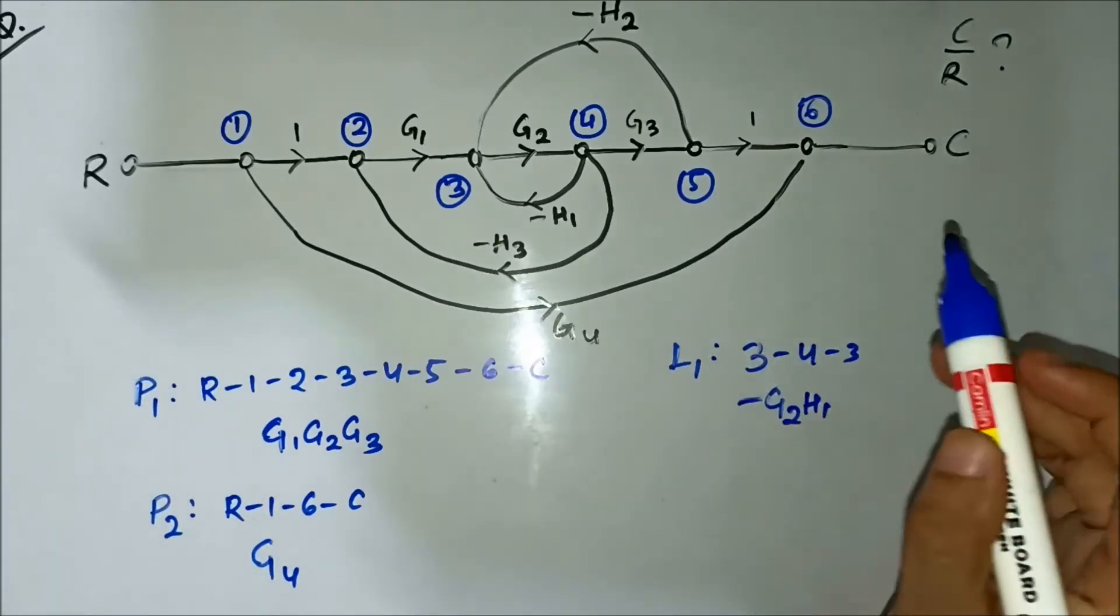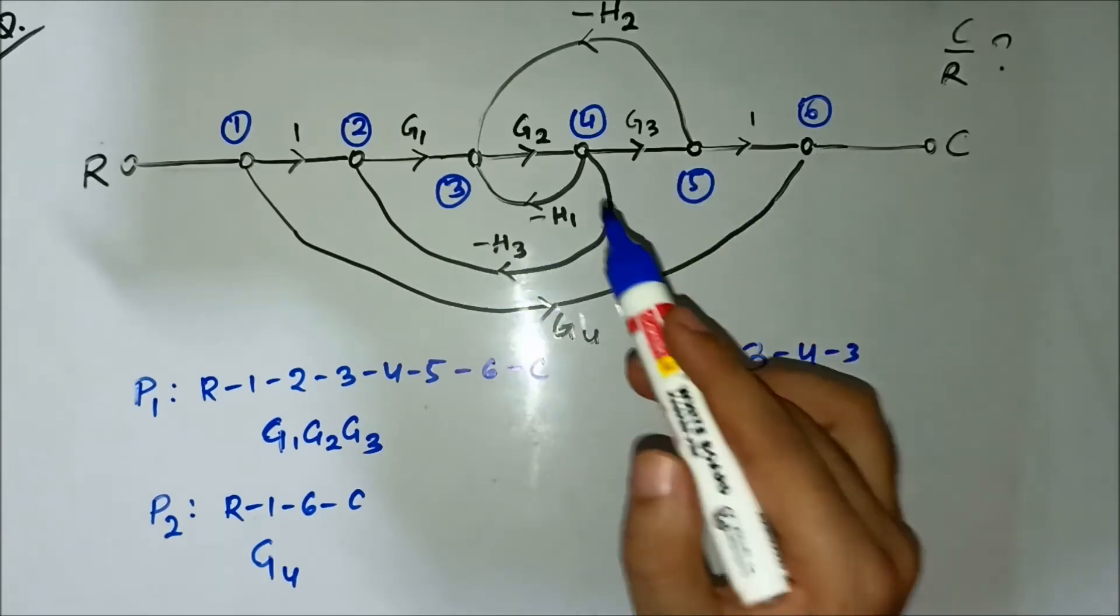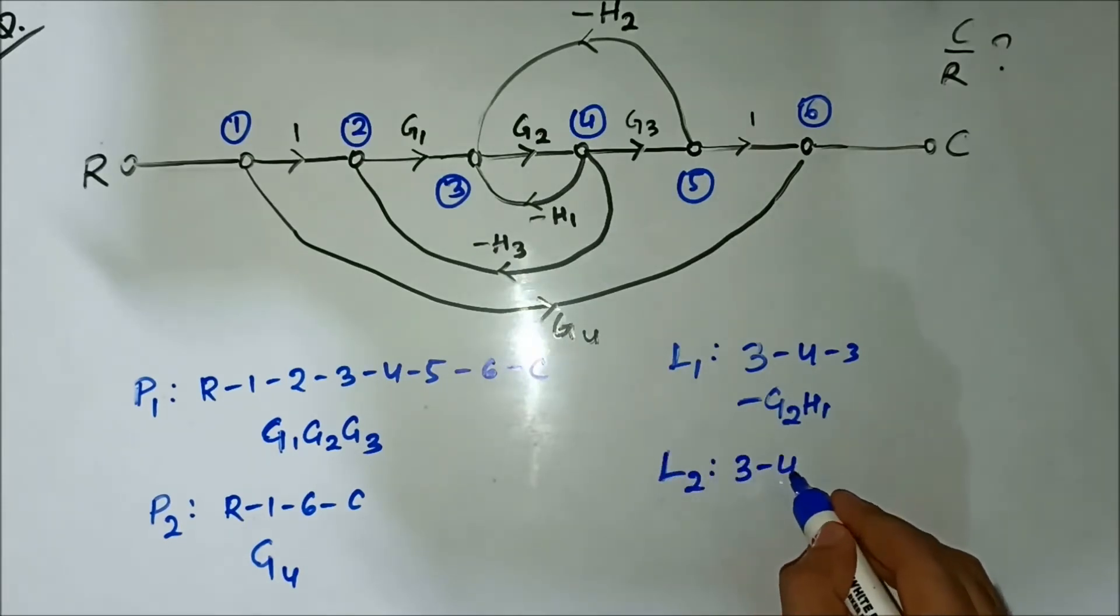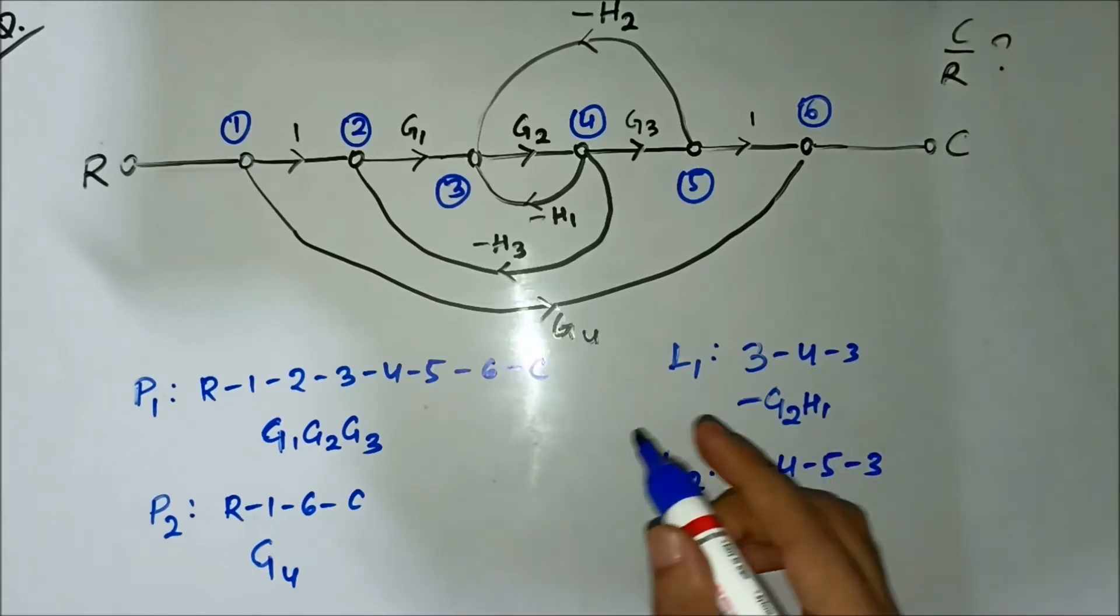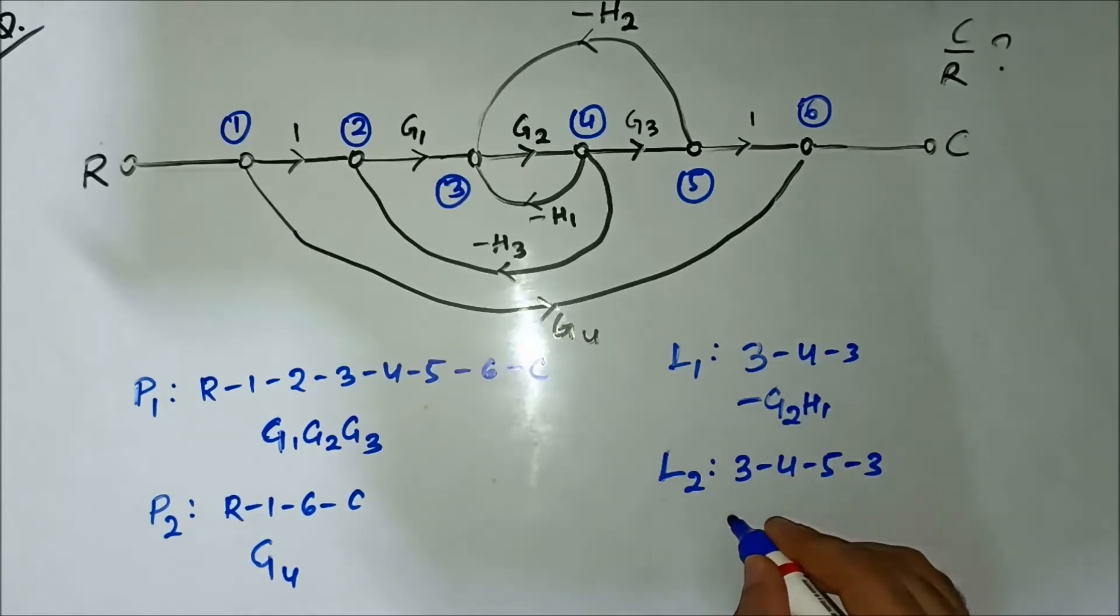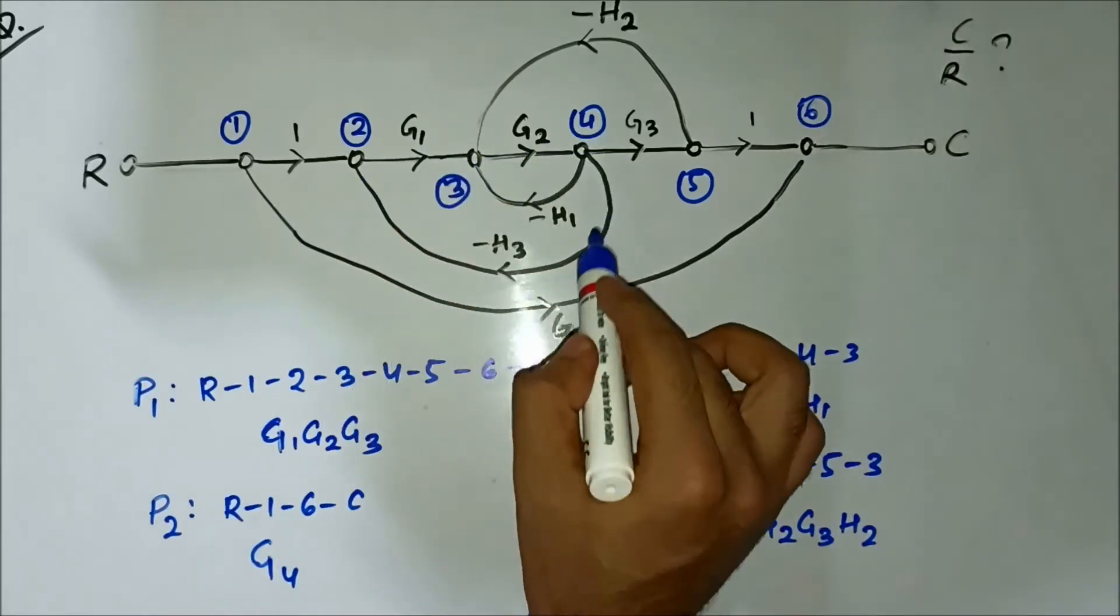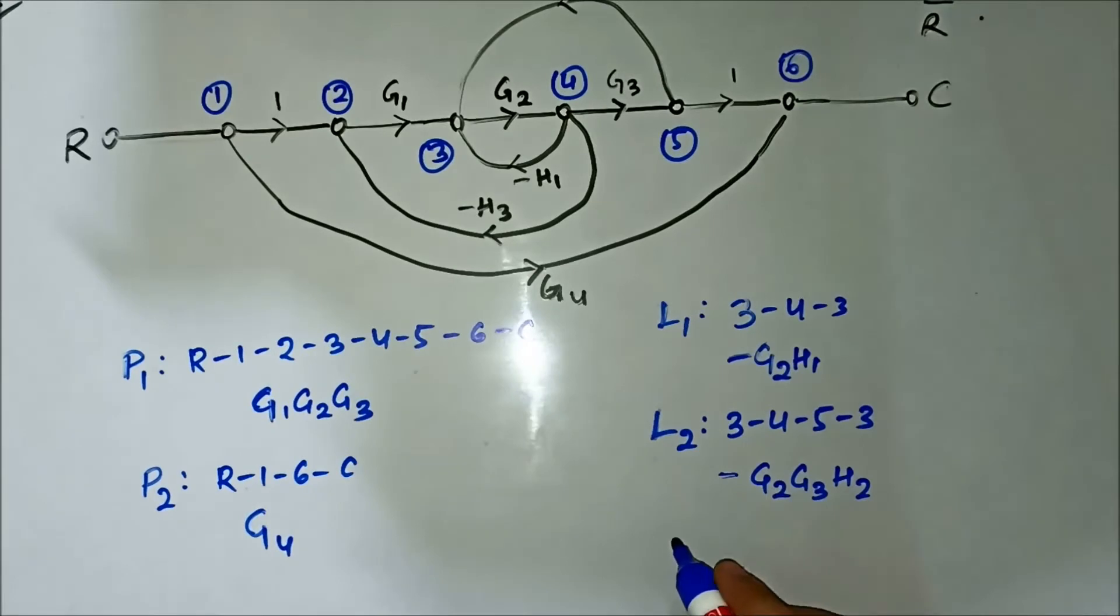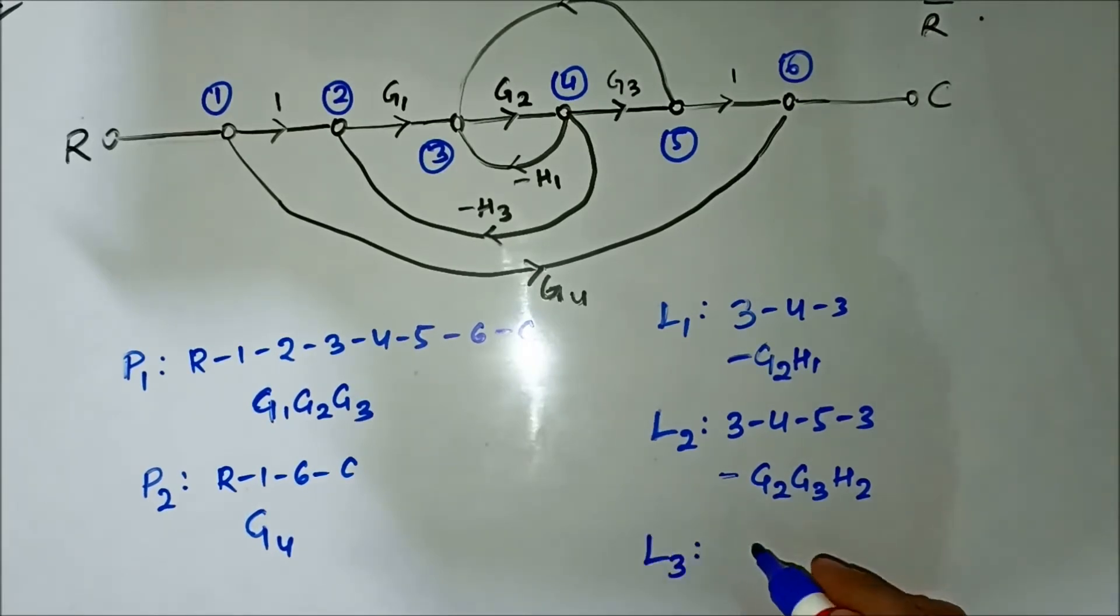Then another loop is 3-4-5-3. The gain is minus g2·g3·h2. Then loop 2-3-4-2. It is minus g1·g2·h3. And I don't think there are any more loops, no.